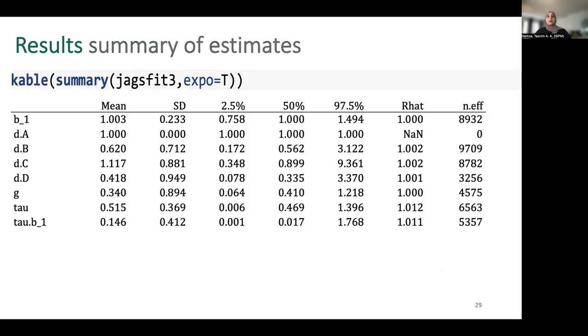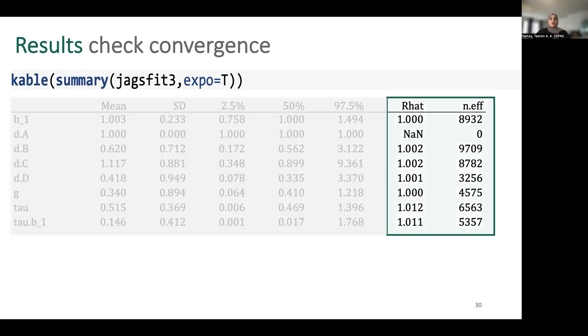Once we fitted the model, I can print a summary of the results. So here it's showing us the mean, standard deviation, et cetera, for each of the parameters. We have here the regression parameter B, the relative treatment effects D, and the bias effect, plus the two heterogeneity parameters. Also to provide the convergence information, the Gelman-Rubin statistic, and the number of effective sample size.